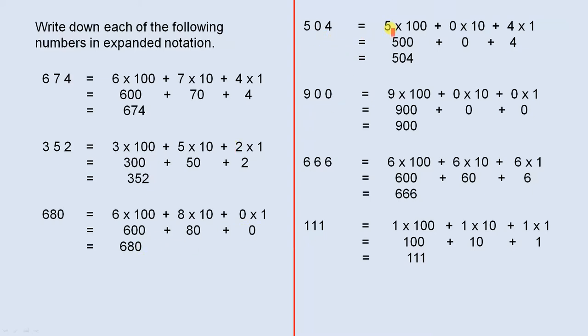504 is 5 times 100 plus 0 times 10 plus 4 times 1. 500 plus 0 plus 4 is 504. 900 is 9 times 100 plus 0 times 10 plus 0 times 1. 900 plus 0 plus 0 is 900.